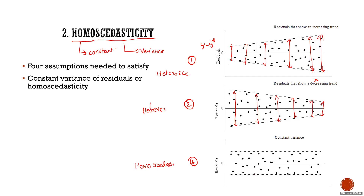In the case where the variance is constant in the error terms, you can go ahead and apply linear regression — just take this as a fact. If you want to understand the reasoning, you have to go through the derivation of that statistical model to understand why constant variance works and why changing variance is a problematic thing for that formula.